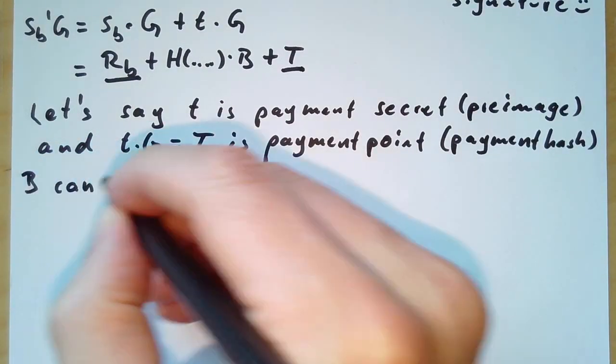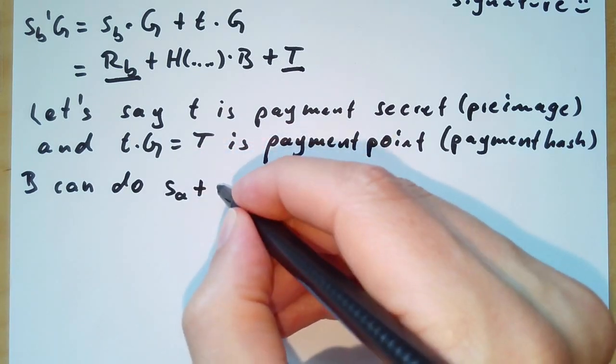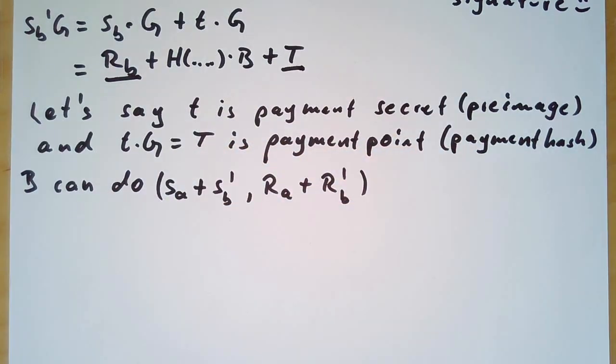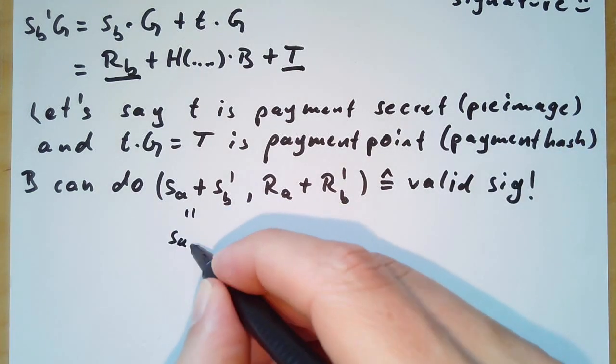b can use the adapter signature sb' and add it to sa and do the same with the nonce. And this is a valid multi-signature. We call this adapter multi-signature sab' and rab'.